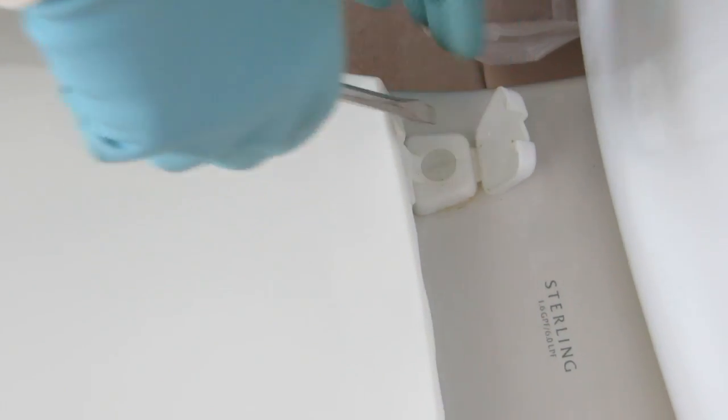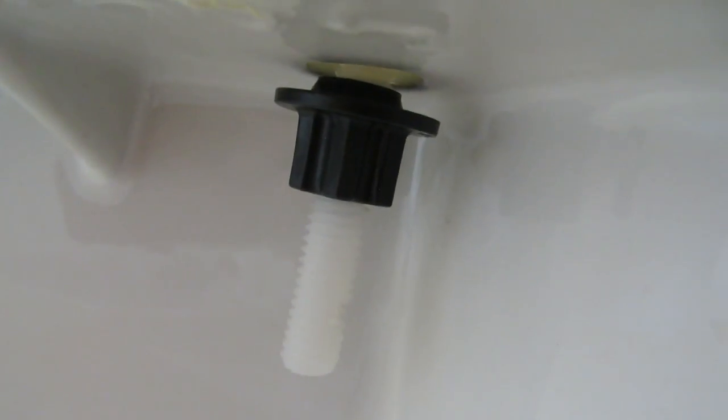So underneath there's these little plastic screws. You will need a wider screwdriver for this, otherwise the plastic could bend and break. Also underneath the toilet there's these screws. Very easy. You need to unscrew that, okay?